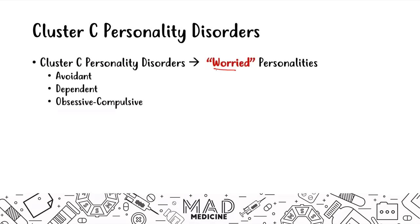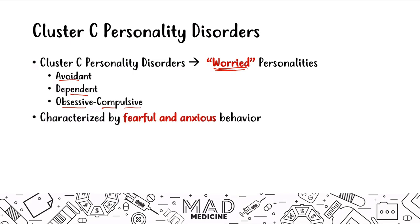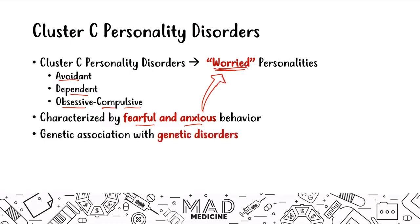These are the worried personalities. All of these people are usually worried about one thing or another, and that's a very hallmark indication that someone has a cluster C personality. The three main personality disorders you should be familiar with for Step 1 are avoidant personality disorder, dependent personality disorder, and obsessive compulsive personality disorder. All of these personalities are characterized by fear and anxiety — that's the type of behavior they have across the board. There's also a genetic association with several genetic disorders that tend to show up.